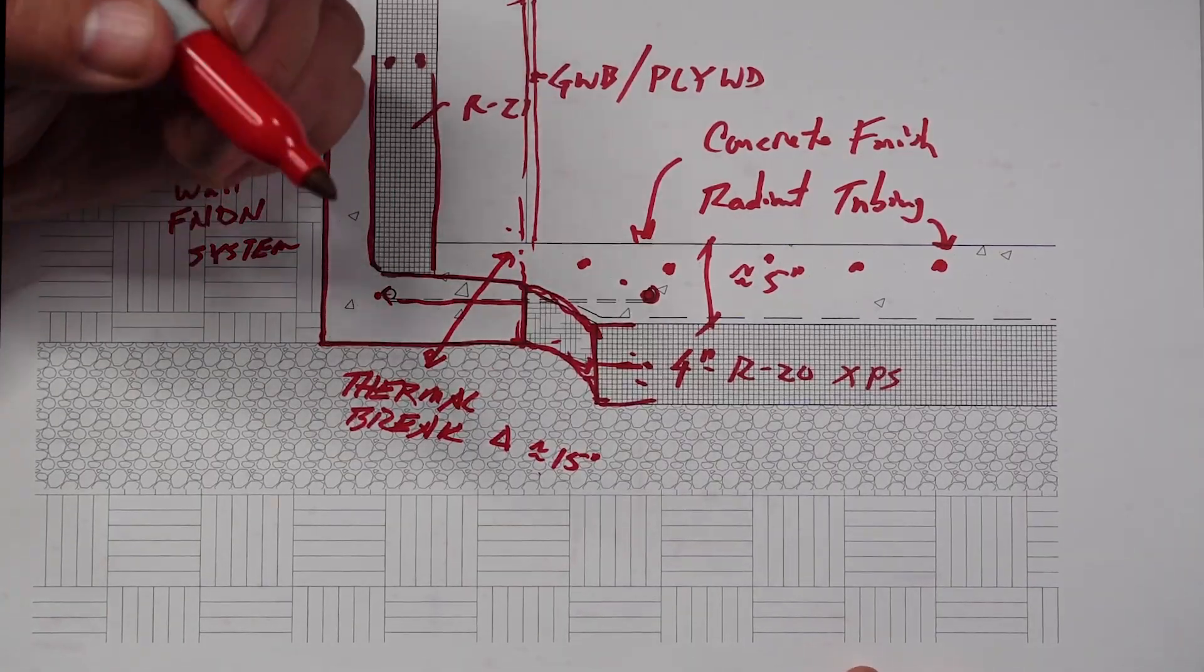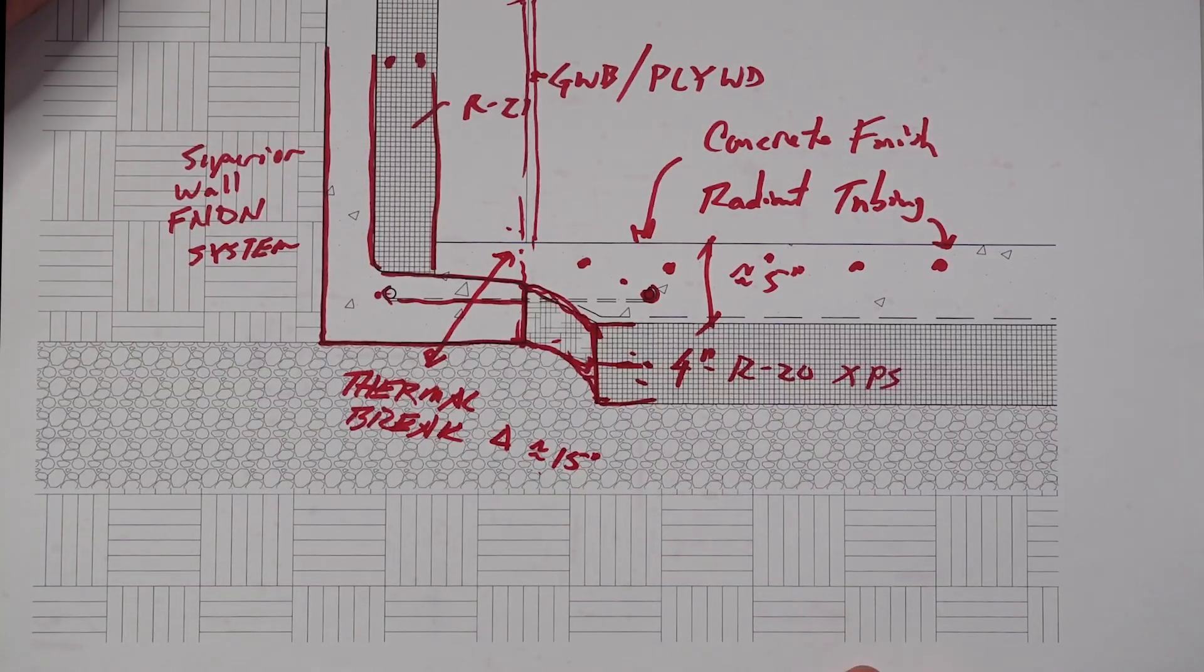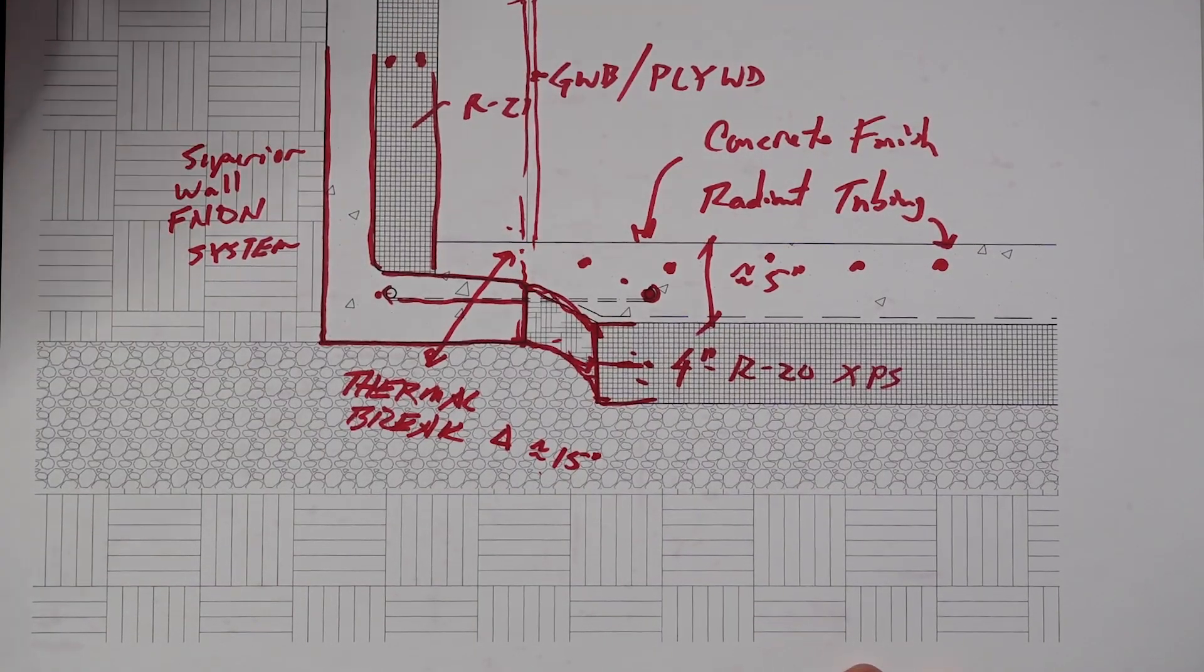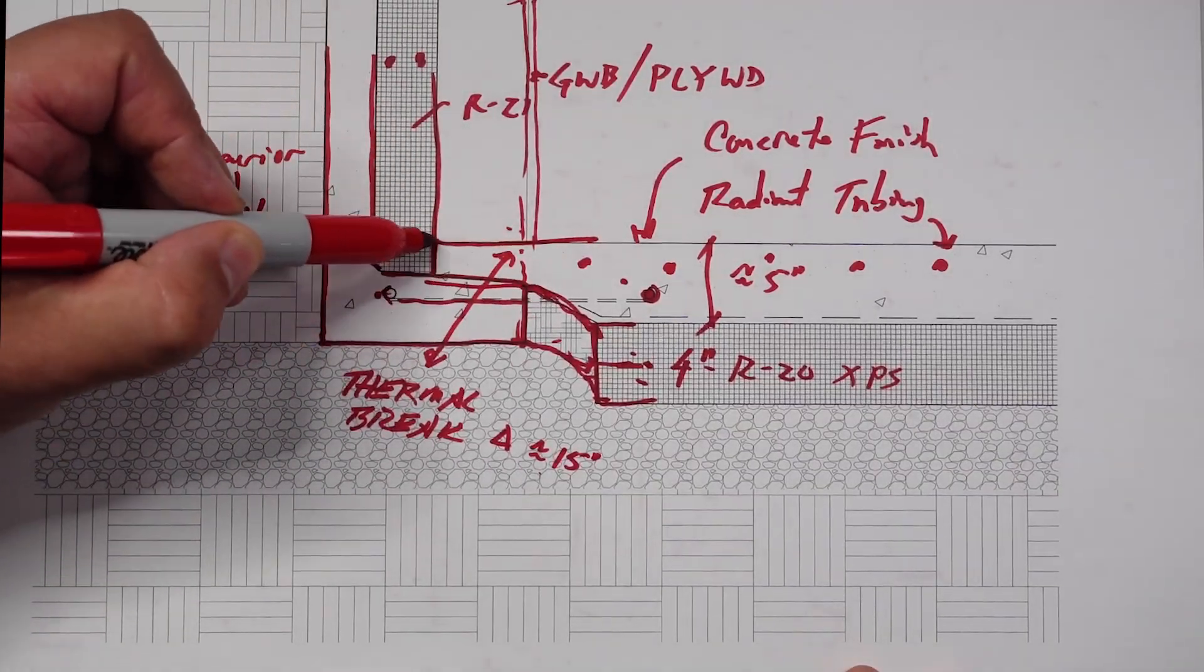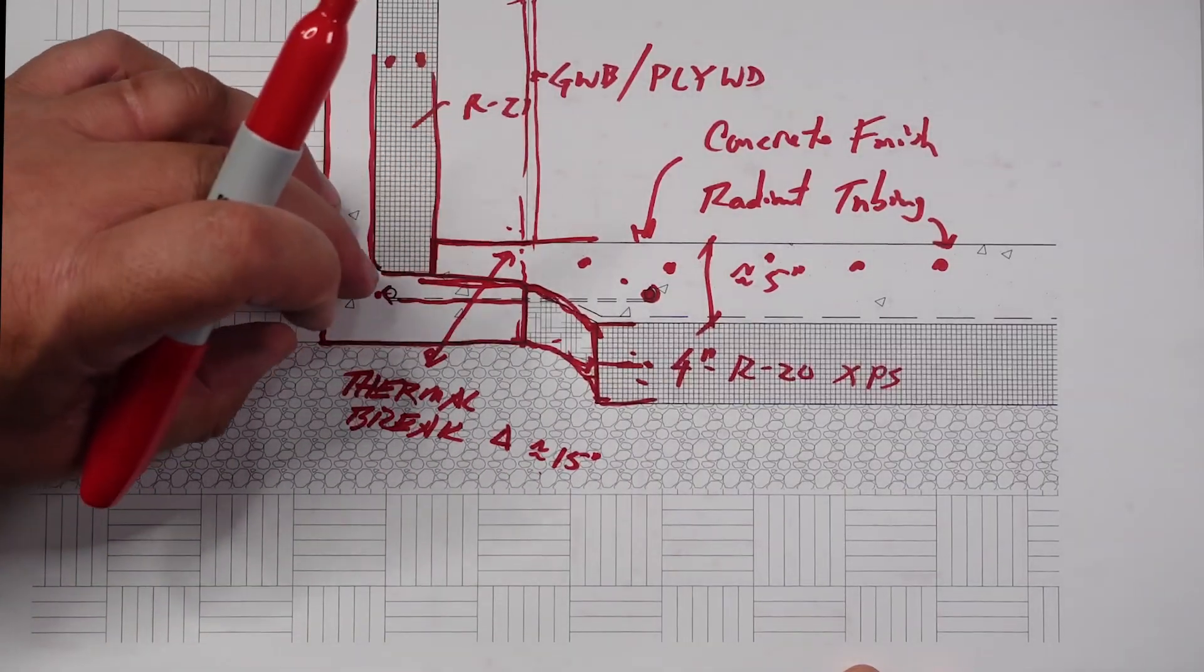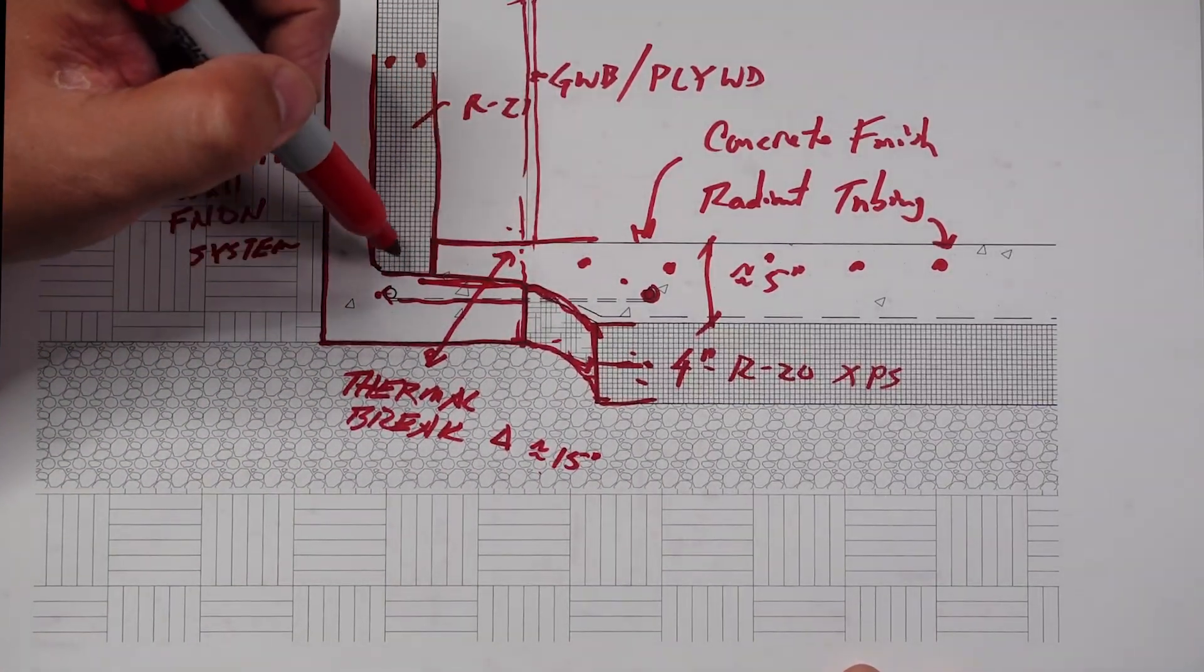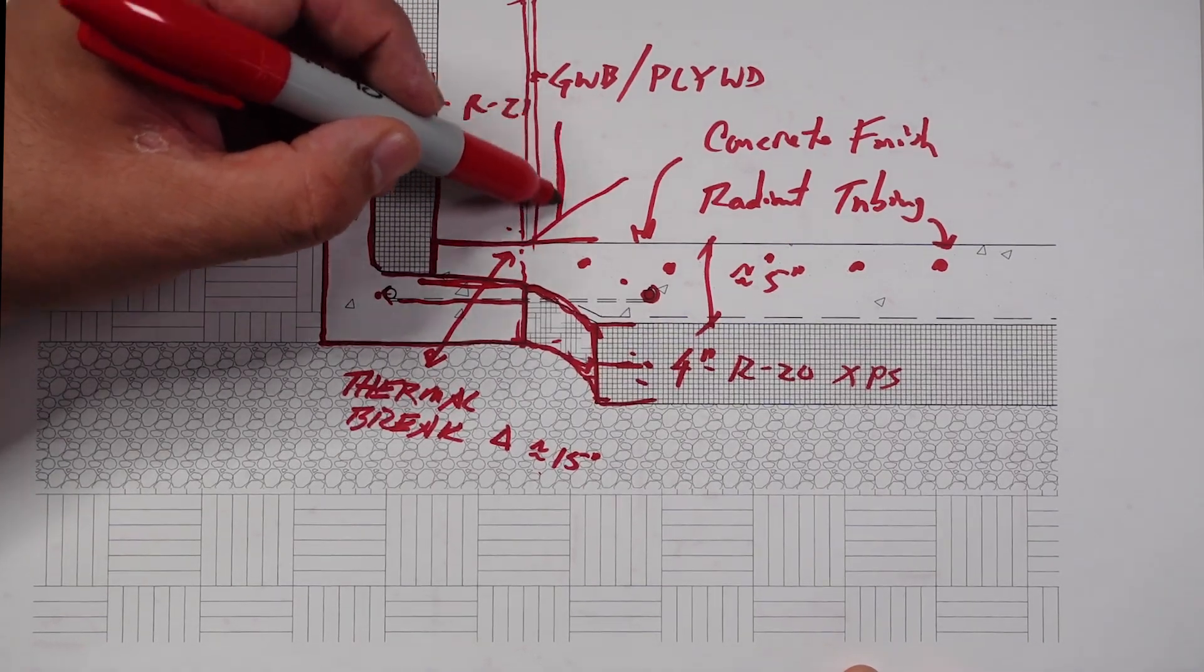I always take the approach where I do the best we can with what we have. And when I say what we have, it's materials, it's systems, it's budget. All of this stuff gets knitted into that quilt of success, right? The concrete does go all the way in and pour up against that, so there is some physical connection and some lateral tie-in.